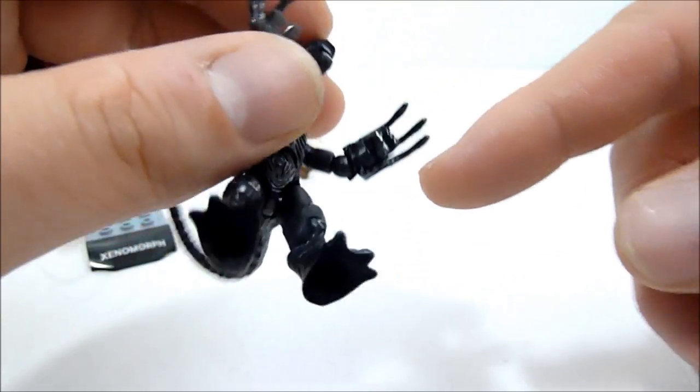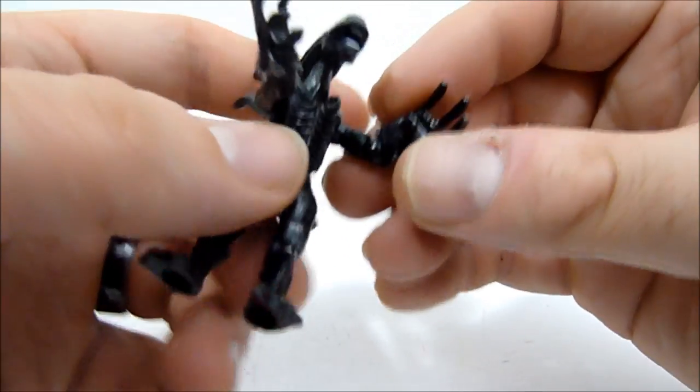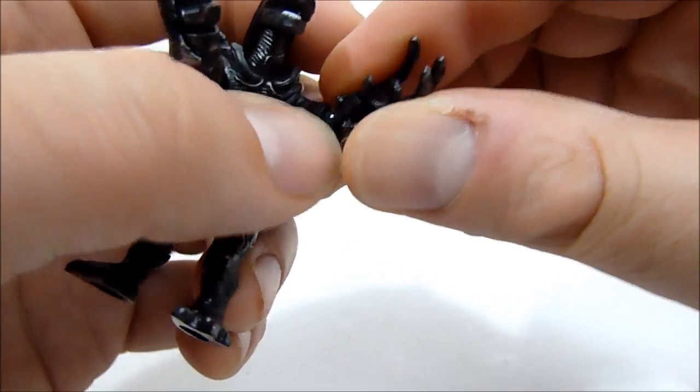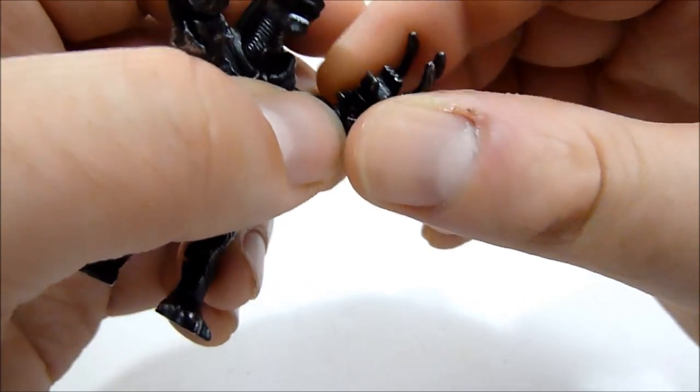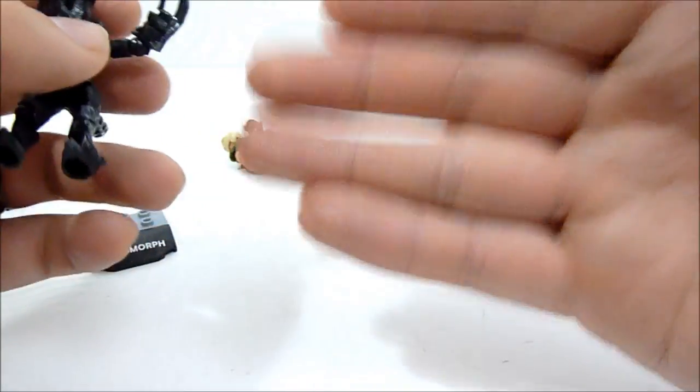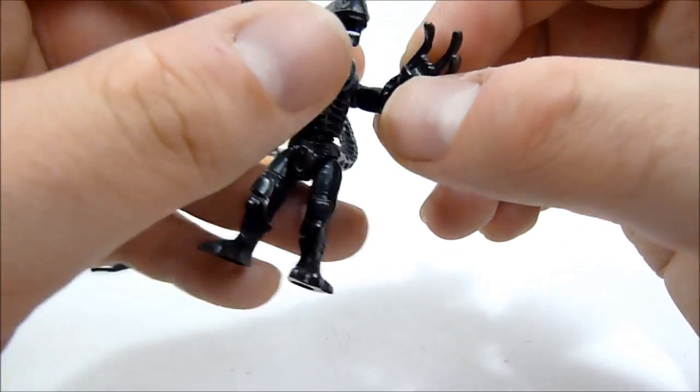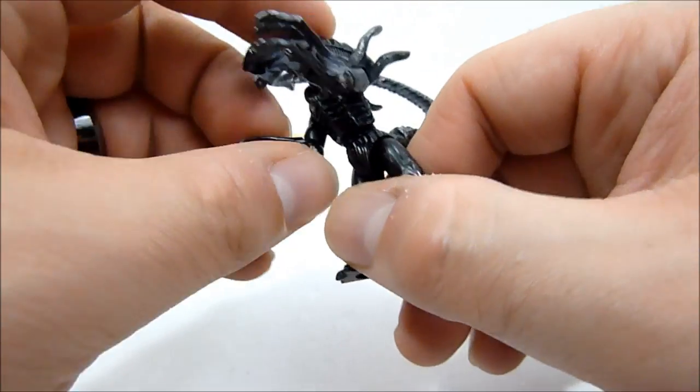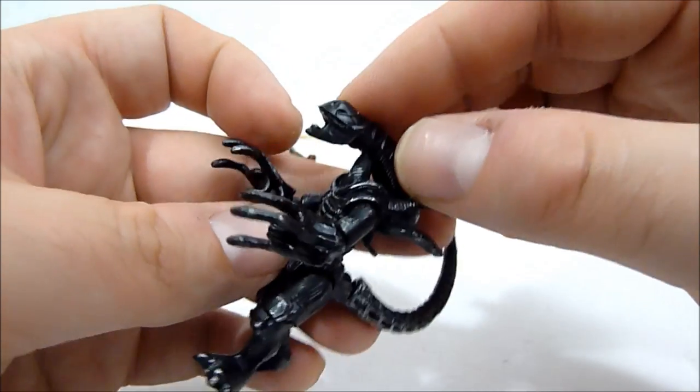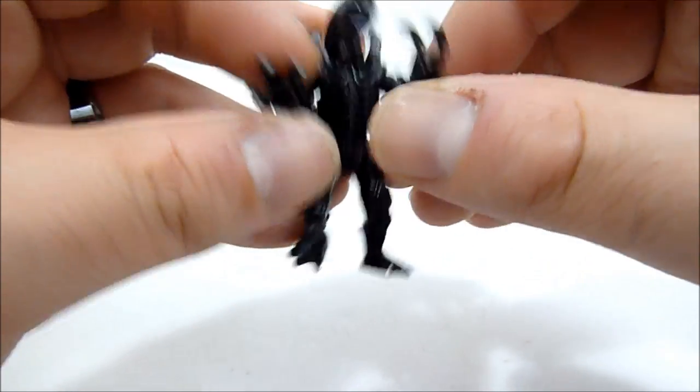He does have these nice claws which go over the normal hands, but again I feel these claws are a little bit too big and bulky. I think I would prefer if we got maybe just the regular hands honestly, or if they made separate hands. We got different hands for the Ninja Turtles, so maybe we could get some hands that are just kind of claws, even if it's just two fused sets of fingers.